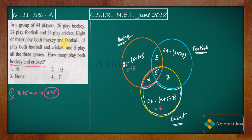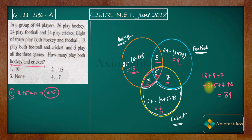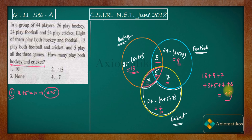If x = 5, we add everything: 13 + 9 + 7 + 5 + 7 + 3 + 5 should equal 44. But the sum is 49, not 44. So option 1, where x + 5 = 10, is wrong.